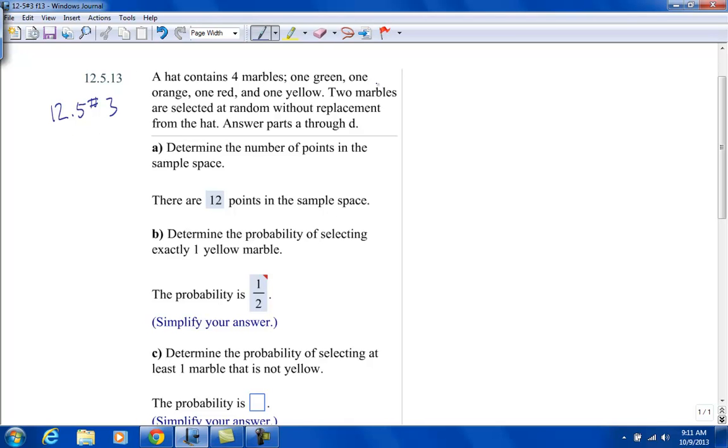It says a hat contains four marbles, one green, one orange, one red, and one yellow. Two marbles are selected at random without replacement. That's key to this from the hat. Answer parts A through D.